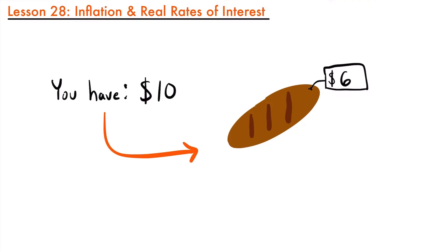That 3% interest rate isn't entirely accurate in telling you how much more your investment is worth one year from today. This is where the idea of real rates of interest comes into play. The real rate of interest is an interest rate adjusted for inflation, and it will more accurately reflect the change in purchasing power. This is best demonstrated with an example problem.